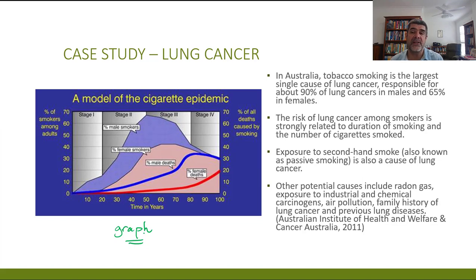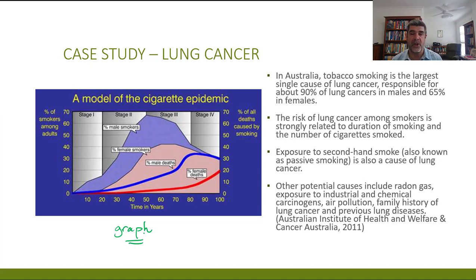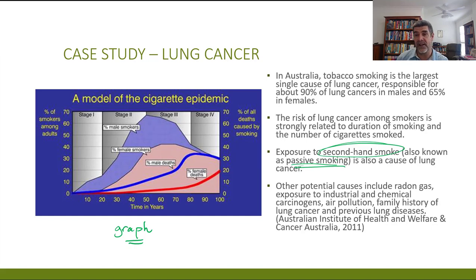Tobacco smoking is, in Australia, the largest single cause of lung cancer. It's responsible for about 90% of lung cancers in males and 65% in females. This strong link has caused a huge number of legislative changes — not just in relation to where people can smoke, but because exposure to secondhand or passive smoke has also been seen to have a causal effect on increased levels of lung cancer, limiting to a very small number of places where people can actually smoke cigarettes.